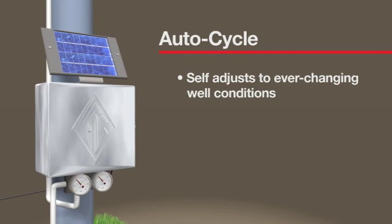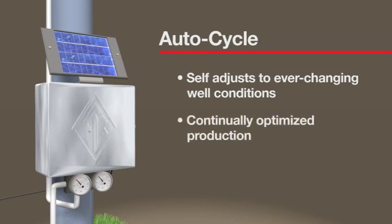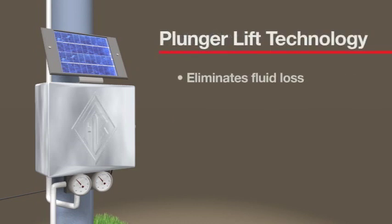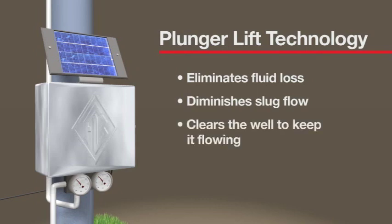By tracking plunger travel time, AutoCycle adjusts operating cycles for continually optimized production. Plunger lift technology eliminates fluid loss, diminishes slug flow, and clears the well to keep it flowing to economic depletion.